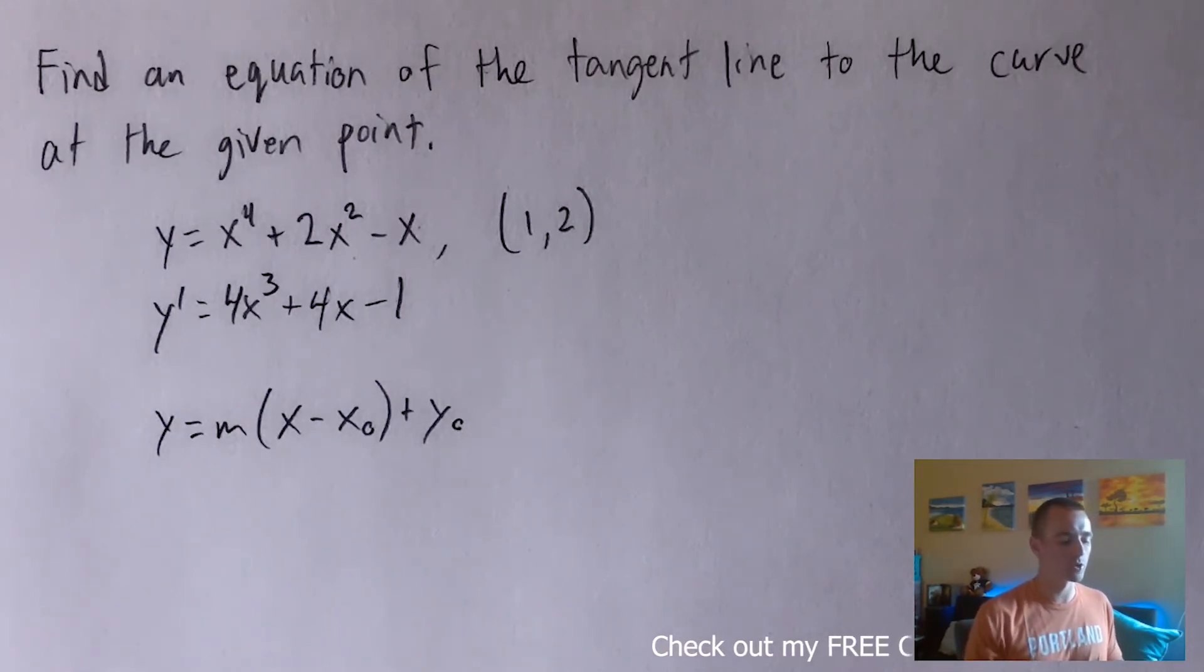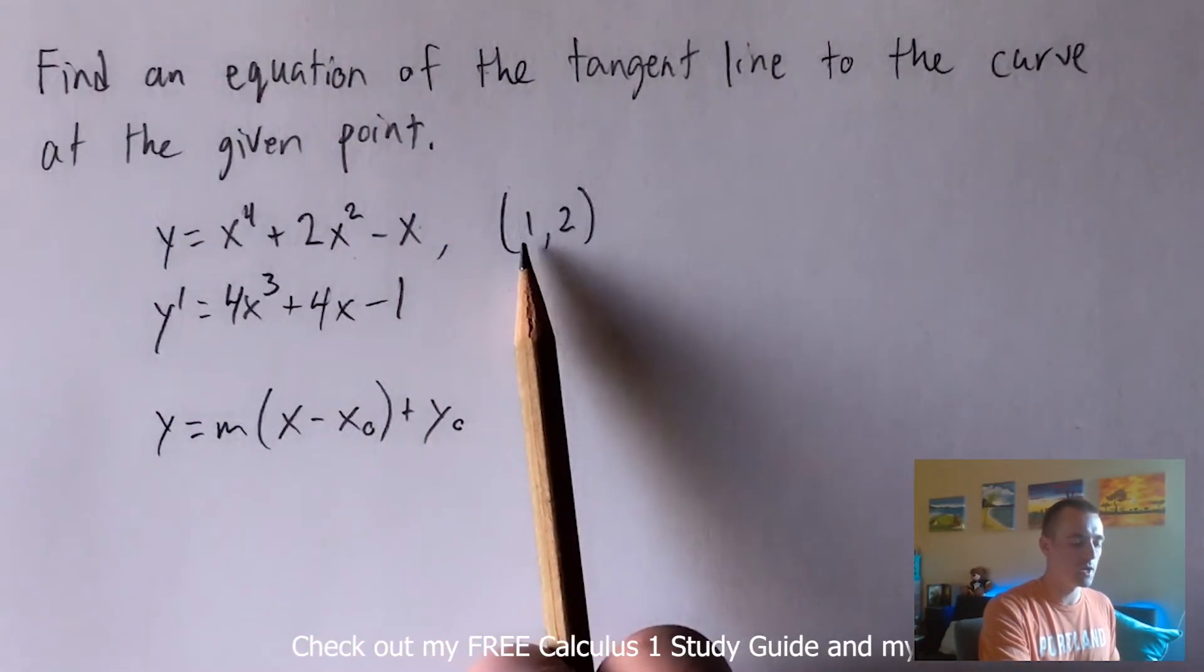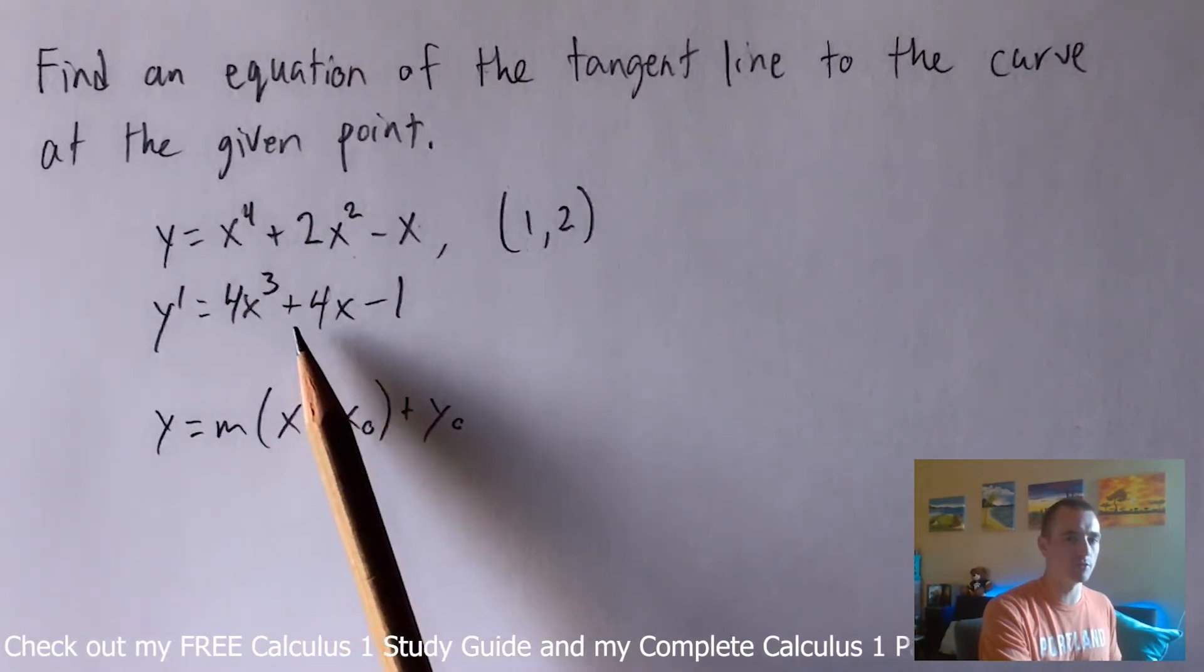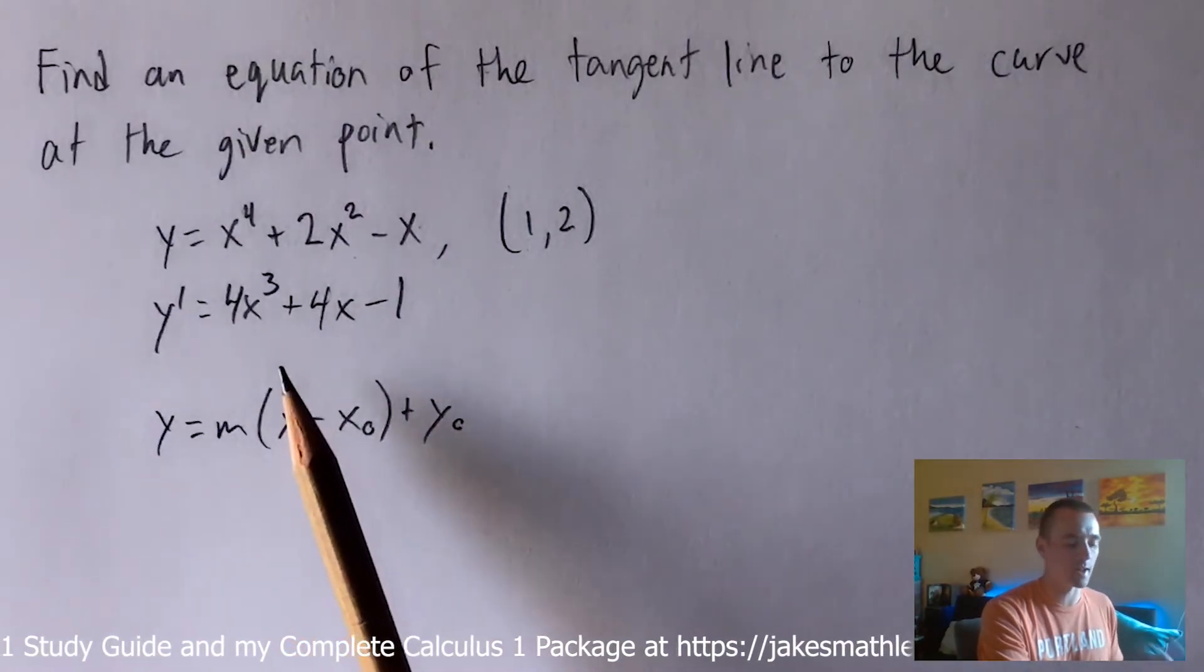So if we're trying to find the slope of y when x equals 1, to figure that out we just have to plug x equals 1 into the derivative of y and that will output the slope of y at that point at x equals 1.